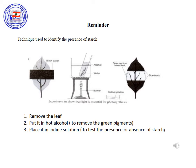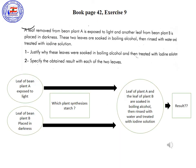The missing nutrient could be light, carbon dioxide, water, or mineral salts. Now open your books page 42 and let's start with exercise number 9.